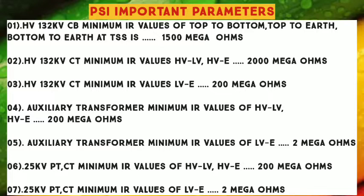Number 4: Auxiliary Transformer Minimum IR Values of HV-LV and HV-A — 200 Mega Ohms. Number 5: Auxiliary Transformer Minimum IR Values of LV-A — 2 Mega Ohms.